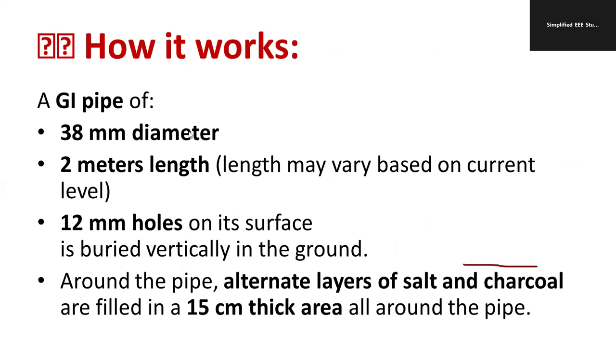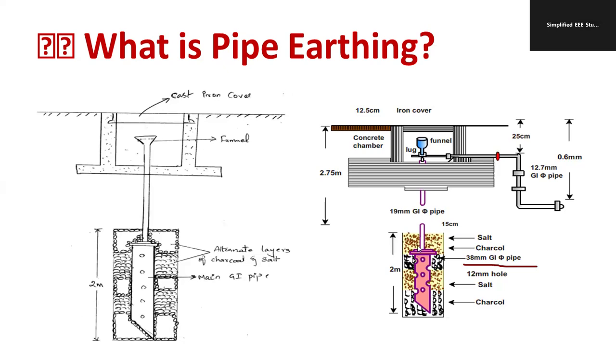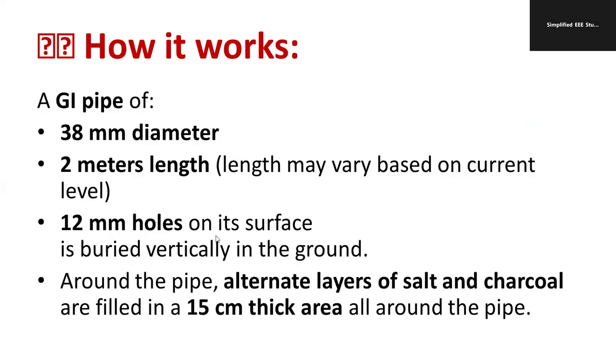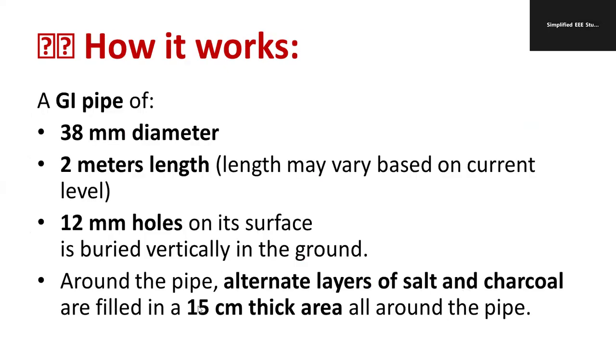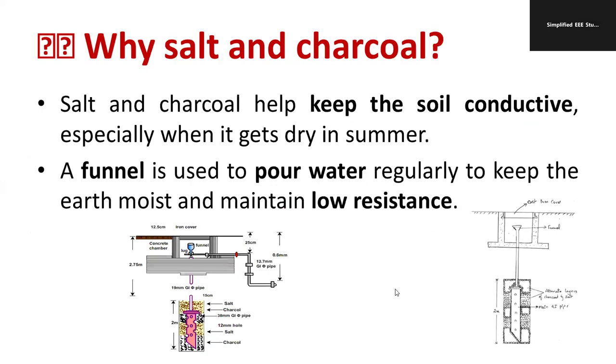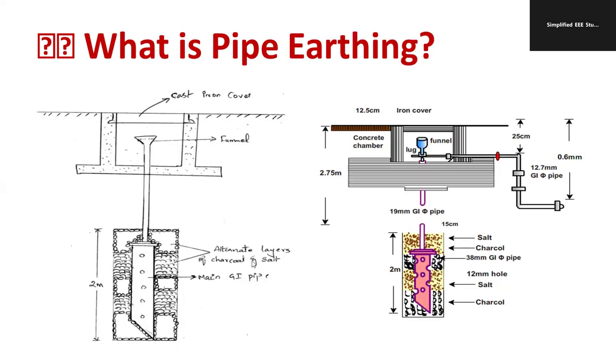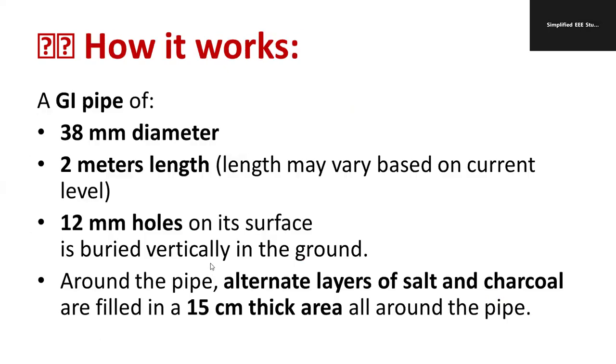A galvanized iron pipe of 38mm diameter and 2 meters length is kept vertically. A 12mm hole is made on the surface. Around the pipe, alternate layers of salt and charcoal are filled 15 centimeter thick. The thickness of this charcoal and salt layer is 15 millimeters to maintain minimum resistance.